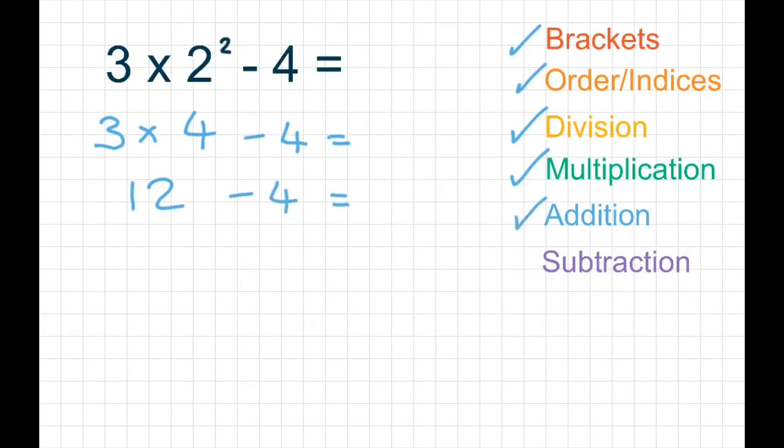We don't have any addition, so we finish once again with subtraction. So 12 take away 4 equals 8.